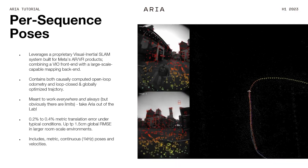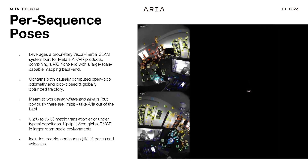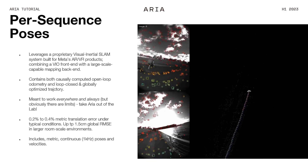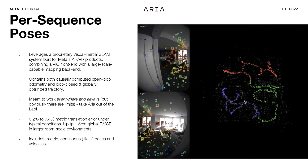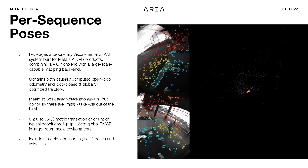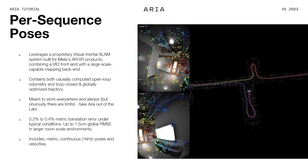We use a proprietary visual-inertial SLAM system with a VIO front-end plus a back-end optimizer that gets maximum accuracy out of it. There is both an open-loop trajectory and a closed-loop trajectory that provides poses in a single joint coordinate frame for the entire sequence. It's built to work anywhere and always — not just in lab settings, but during normal life activities like biking, indoors, and outdoors.